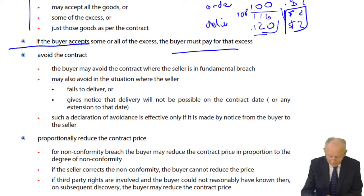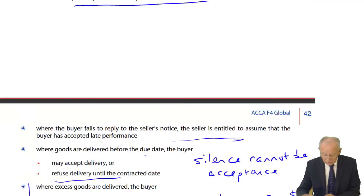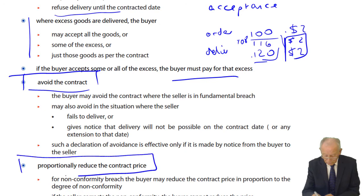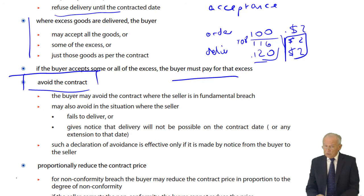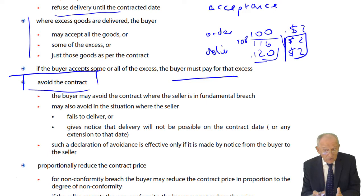That covers proper performance. Remember, the buyer may require proper performance, may avoid the contract, may proportionally reduce the price, or may seek damages. Now the second right: avoid the contract. The buyer may avoid the contract where the seller is in fundamental breach — a major breach with reference to quality, quantity, description, or even timing. Once the seller commits a major breach, the buyer can opt out and say, I no longer want to go ahead with this contract. That is what avoidance means.